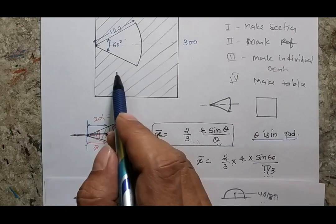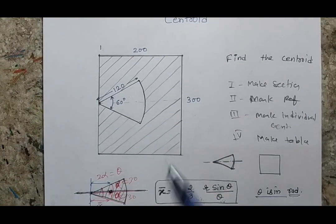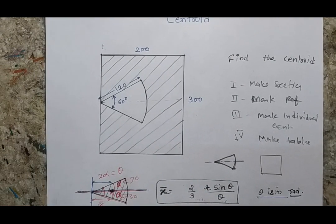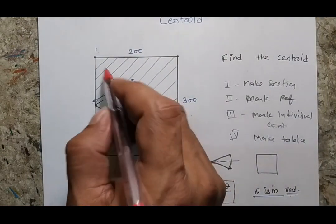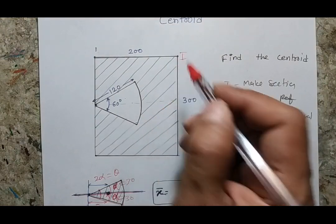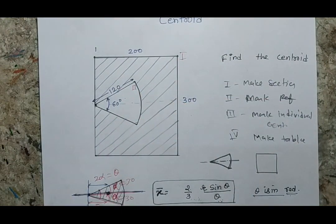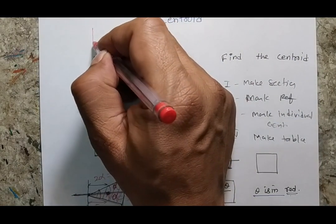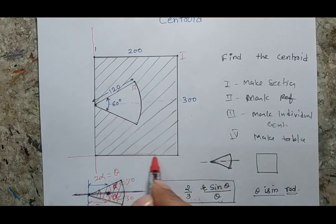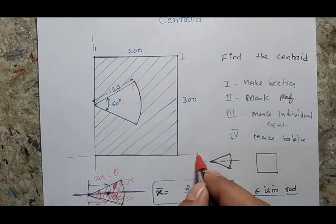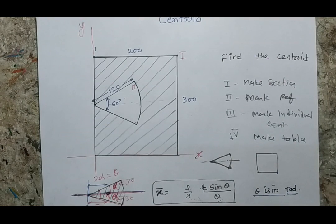Now let us go back to our problem. As I said, the first step is to make the sections: one section will be the complete rectangular body and the second section will be the arc cutout. The second job is to make the references. I am putting the extreme left and the extreme bottom as the reference axes.